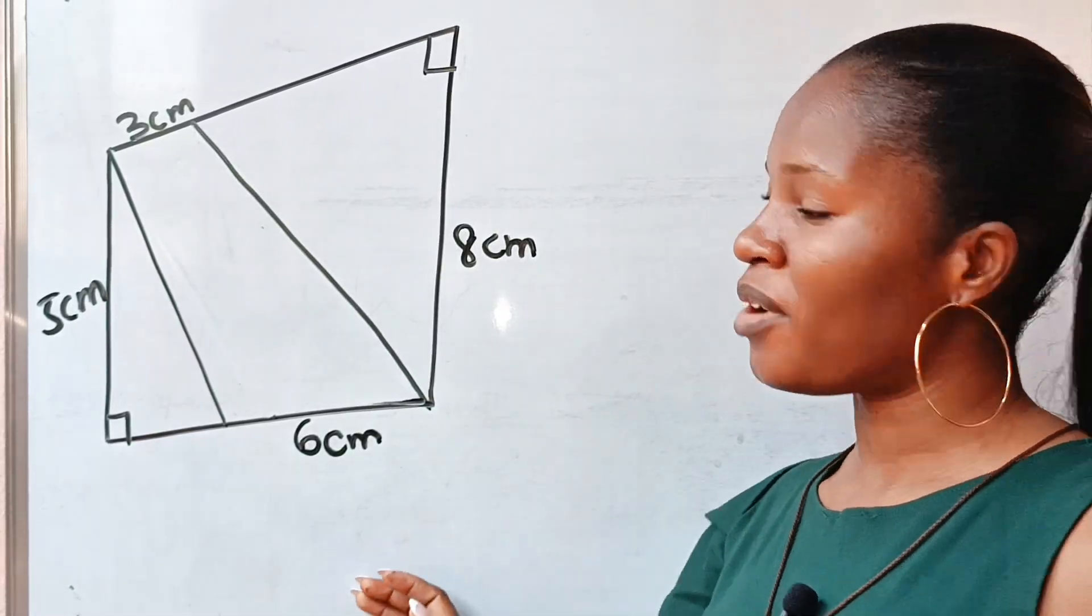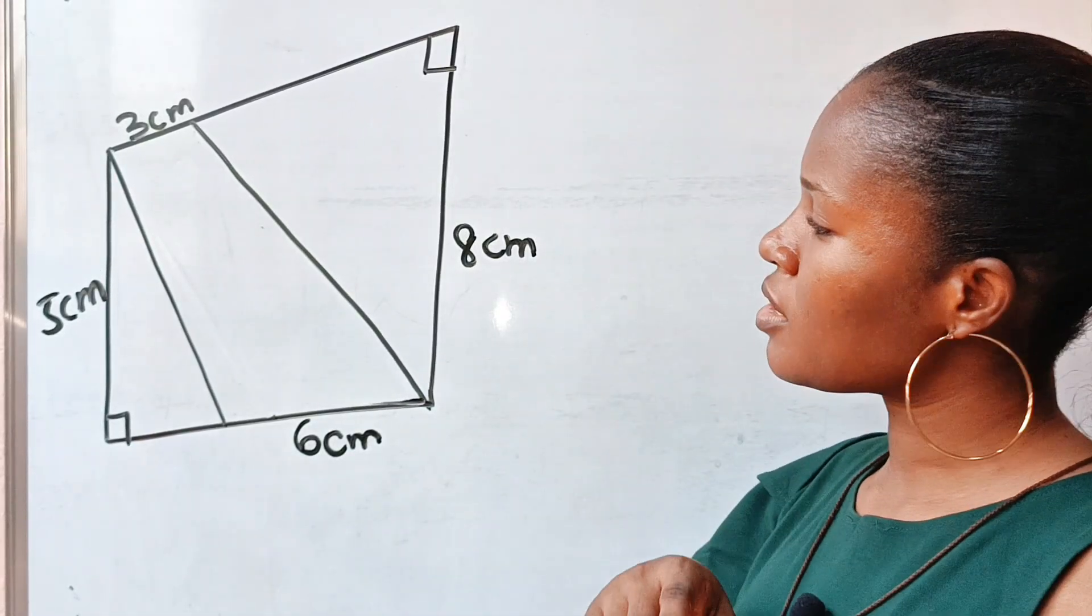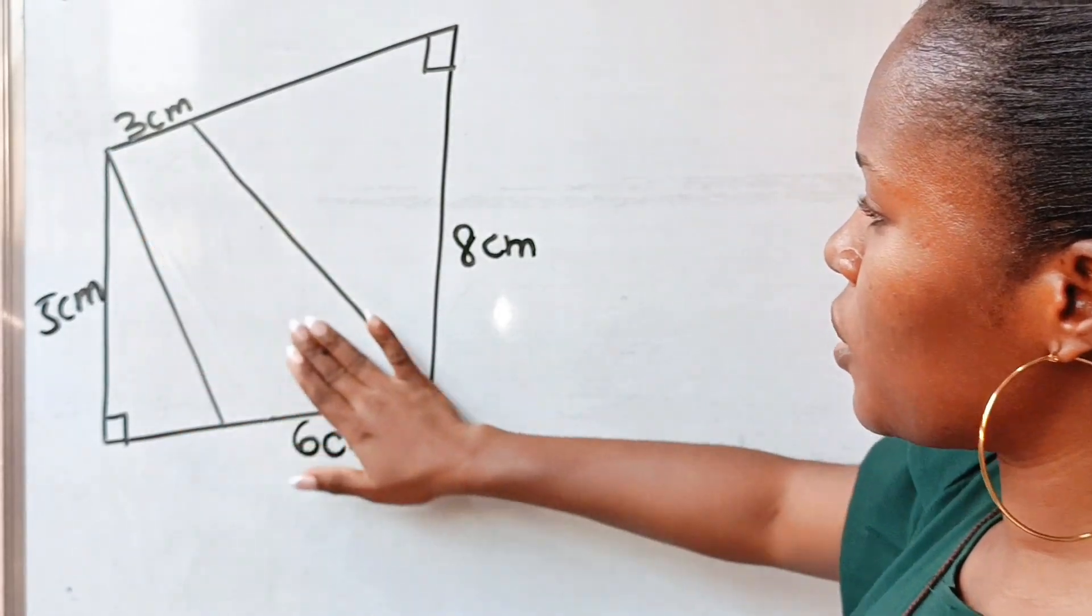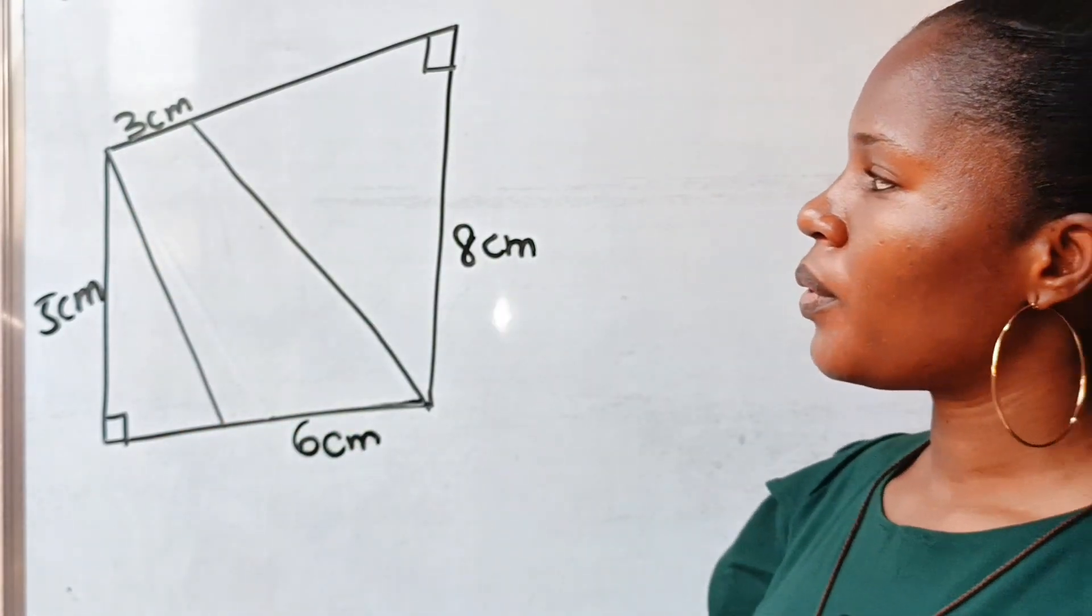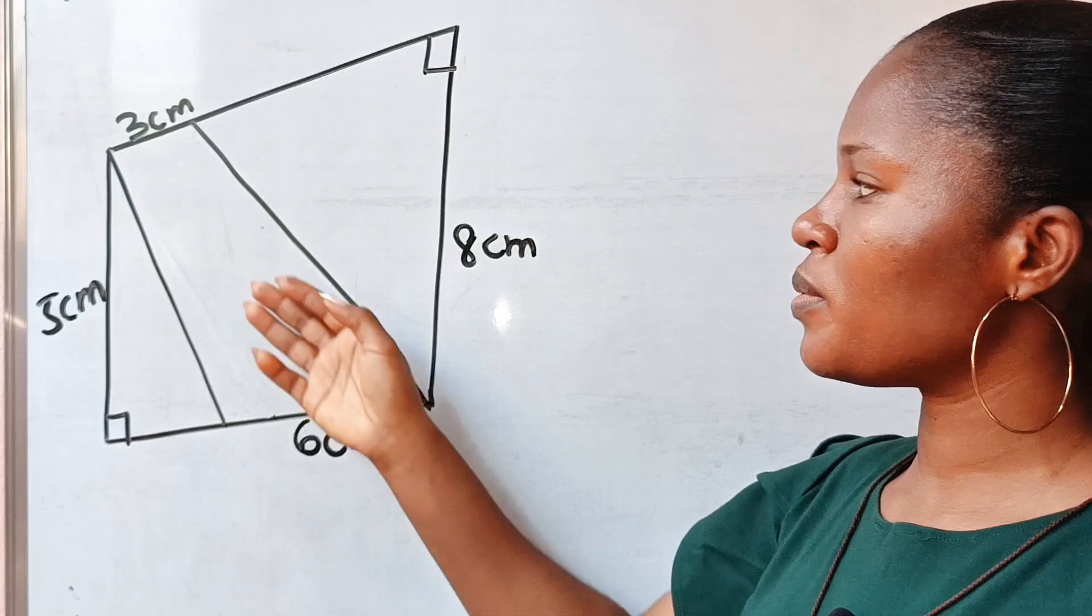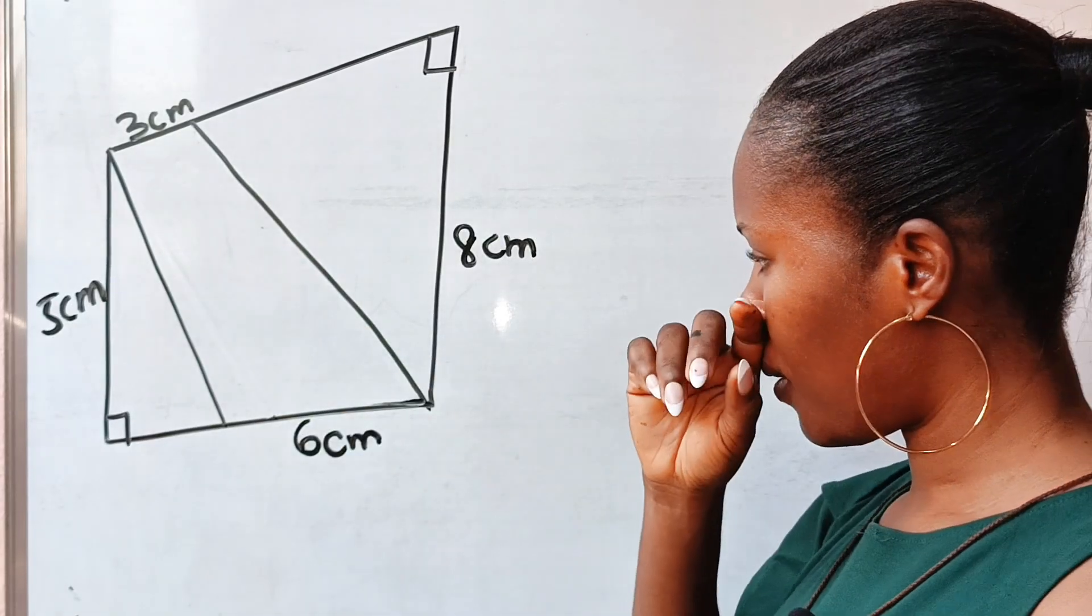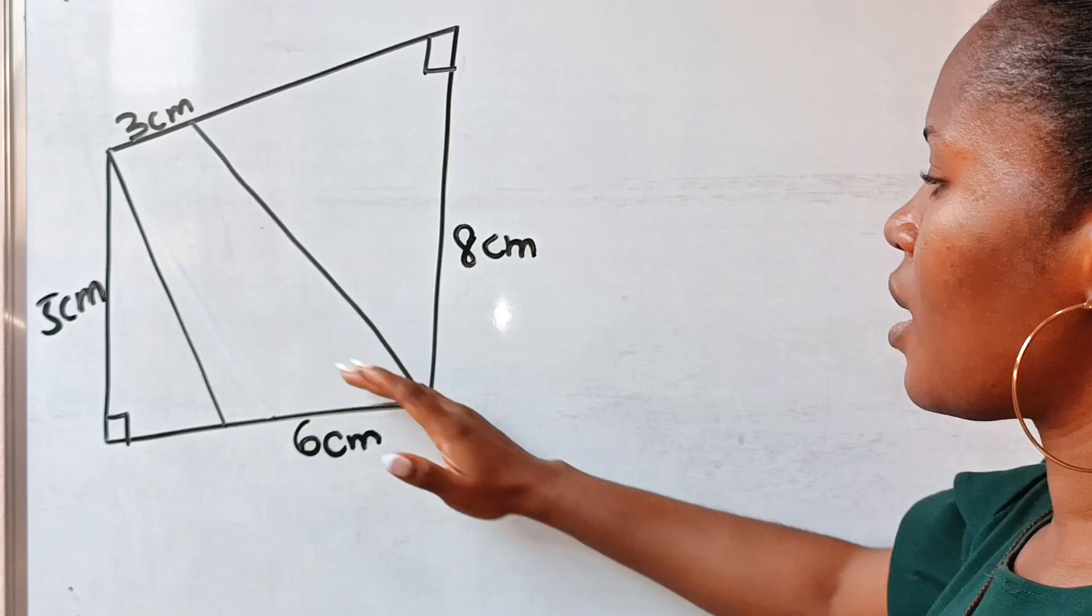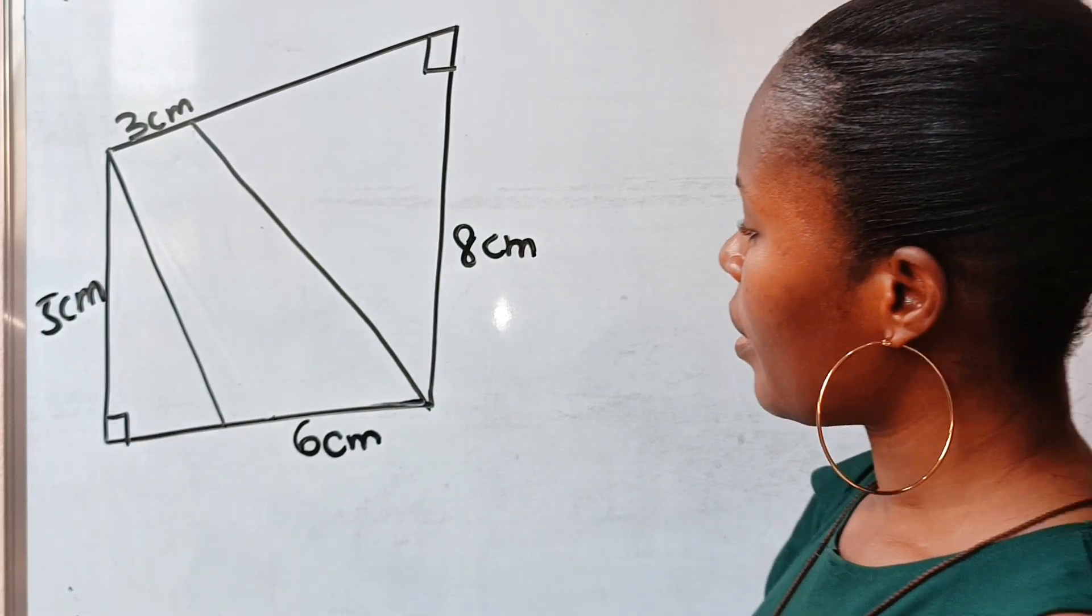Lovely people, you are highly welcome. So today we are asked to find the area of this portion, this particular portion. Now how do we find the area? This looks irregular, the shape. Well, let us first of all divide this into two.